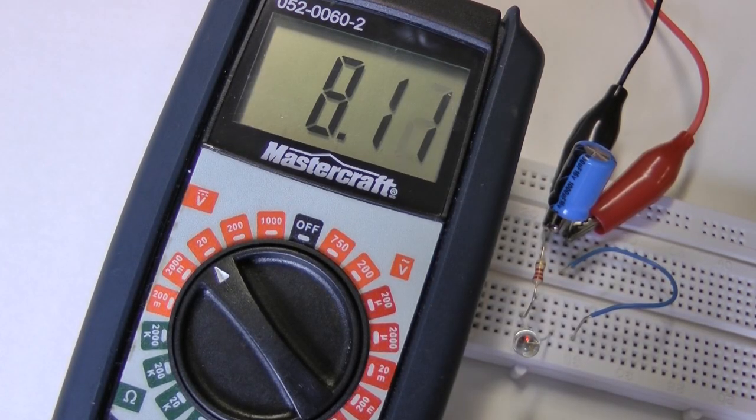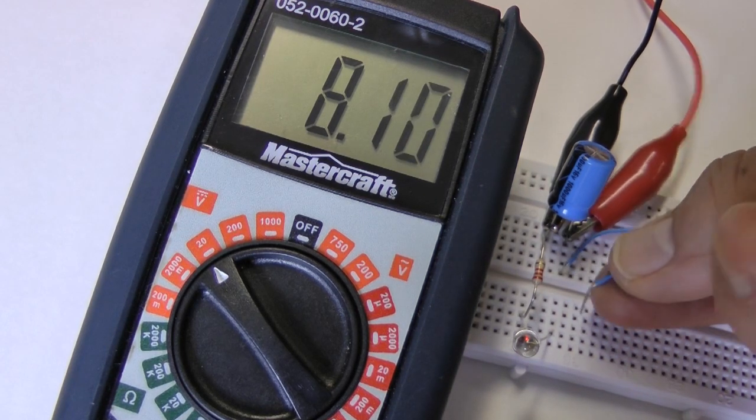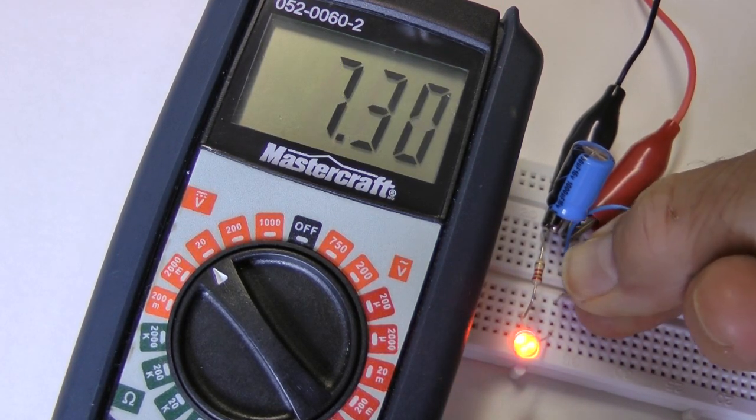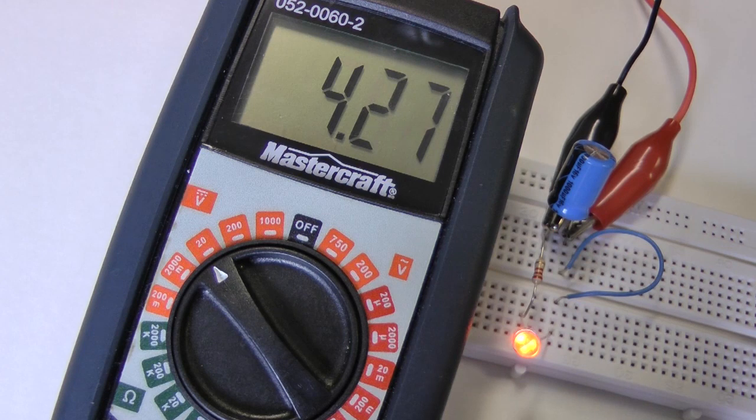With a meter connected to a charged capacitor, we see the voltage is just over 8 volts. Completing the circuit, the voltage rapidly drops as the charge depletes.